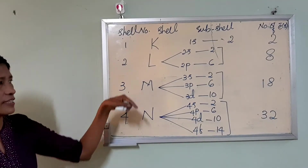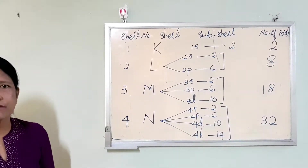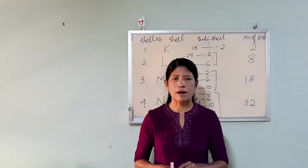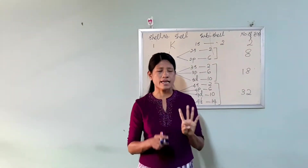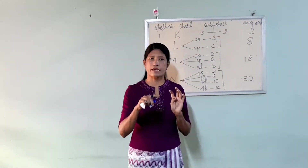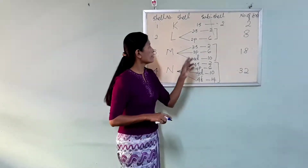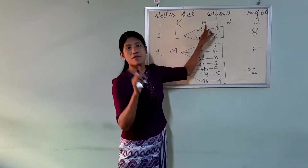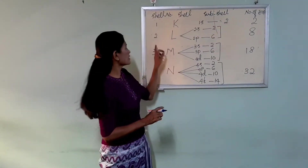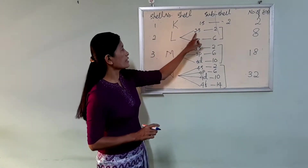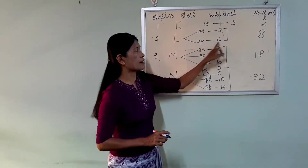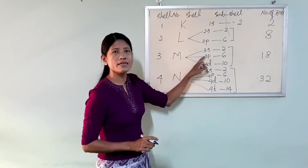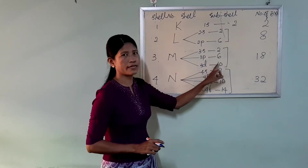We will start with shell 1. Here are the S subshells: chain number 1 — 1S, capacity 2. Chain number 2 — 2S, 2P, capacity 8. Chain number 3 — 3S, 3P, 3D, capacities 2, 6, 10, total 18.